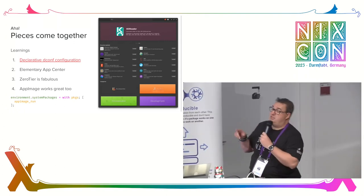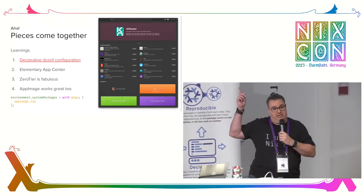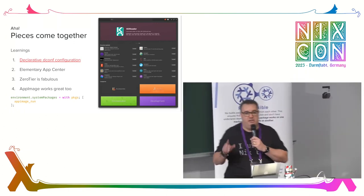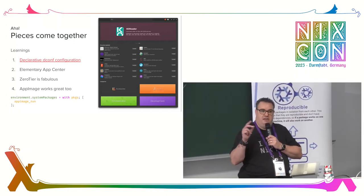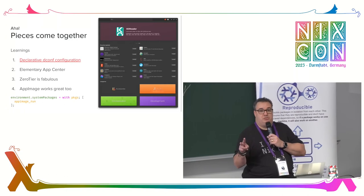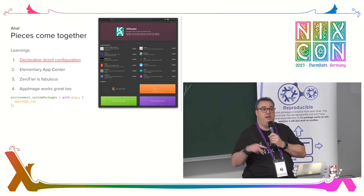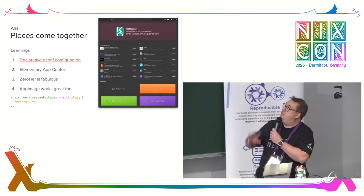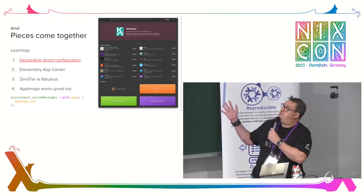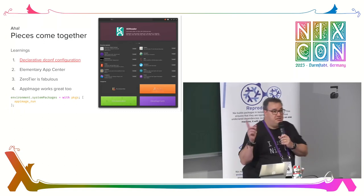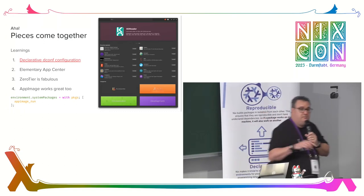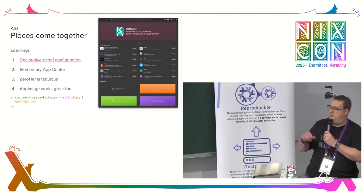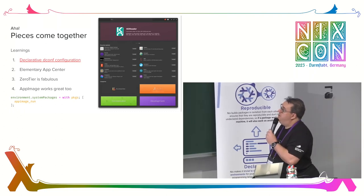I used the Elementary AppCenter — here it is — this is a Flatpak-compatible app store interface, and you get two app stores: Flathub and Elementary's own AppCenter. So you get thousands of applications. I'm using ZeroTier for remote support, so every device my friends and family have, I can immediately connect to.